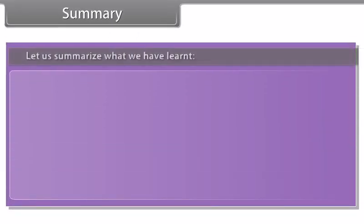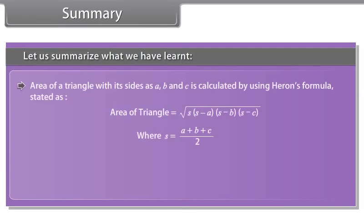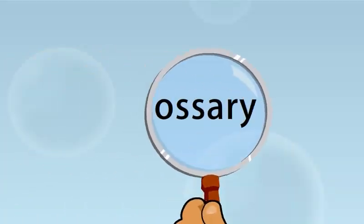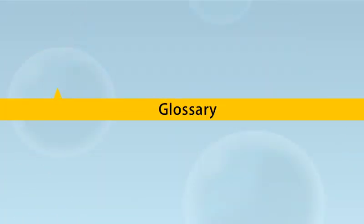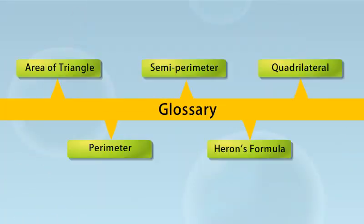Summary. The area of a triangle with sides A, B and C is calculated by using Heron's formula. Heron's formula can also be used to find the area of an irregular quadrilateral if all its sides are given. For that, we convert the quadrilateral into triangles and then apply Heron's formula.